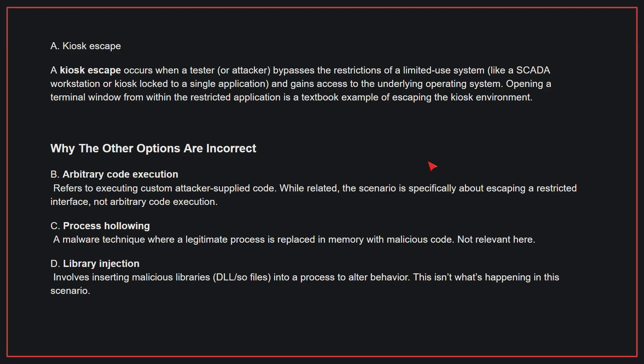Why the other options are incorrect: B, arbitrary code execution — this refers to executing custom attacker-supplied code; while related, the scenario is specifically about escaping a restricted interface, not arbitrary code execution. C, process hollowing — this is a malware technique where a legitimate process is replaced in memory with malicious code; not relevant here. D, library injection — this involves inserting malicious libraries into a process to alter behavior; this isn't what is happening in this scenario. Therefore, the correct answer is A.